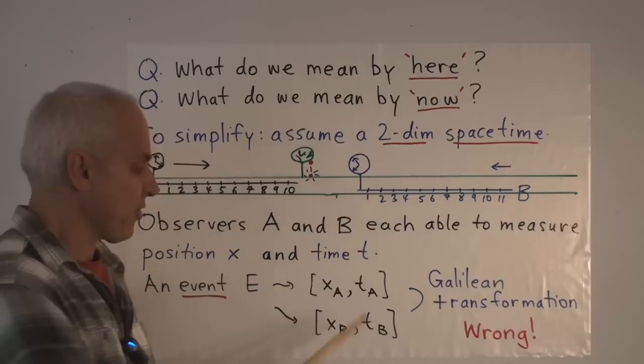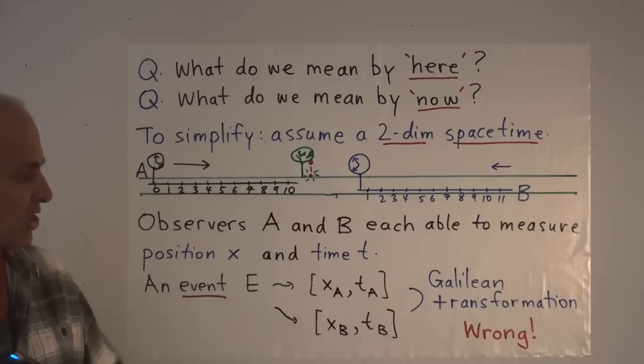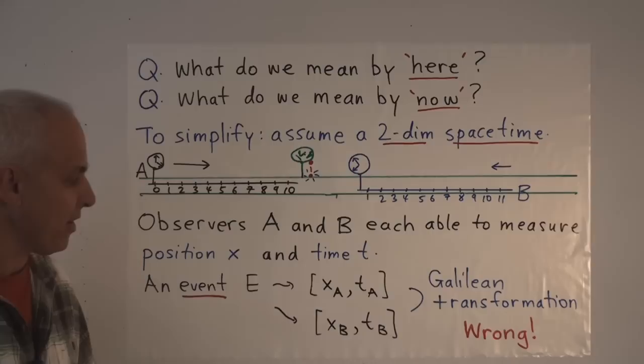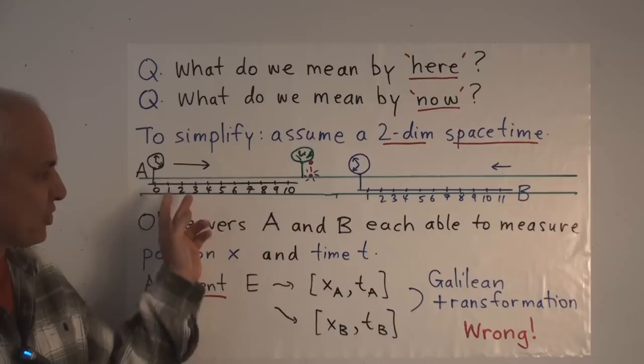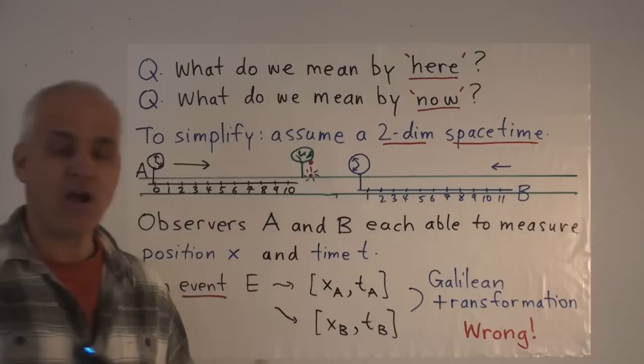Now, if you know the relative velocities of these, you can write down what you think are the transformations or the relations between how A measures things and how B measures things. This was essentially done by Galileo a long time ago. And the problem is that Einstein realized that these obvious transformations, which I'm not telling you what they are, between these things are not quite right. They're only correct if the observers are moving slowly with respect to each other. In fact, the correct transformations between these things are much more subtle.